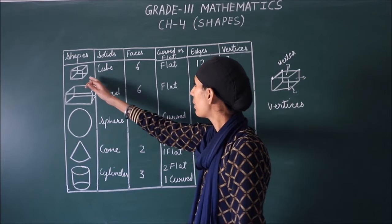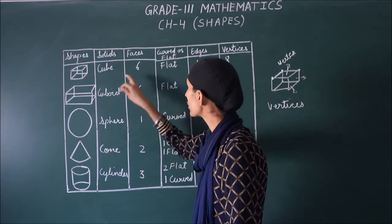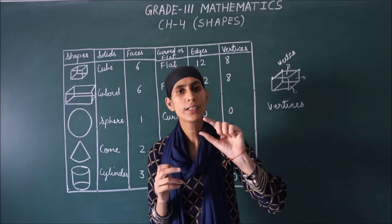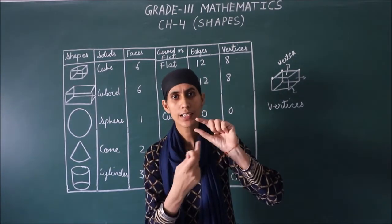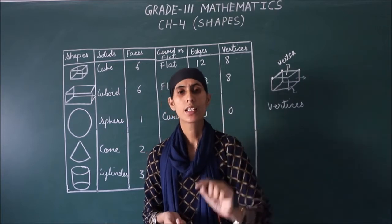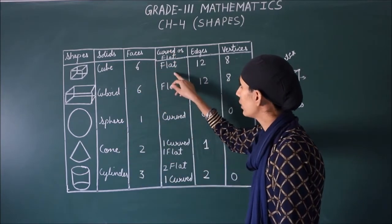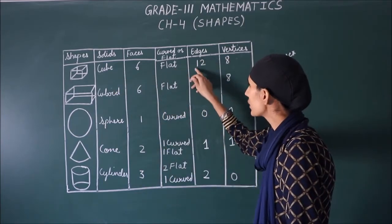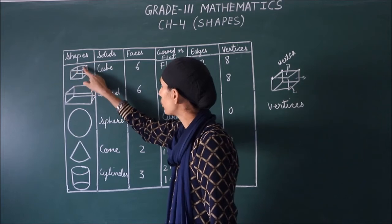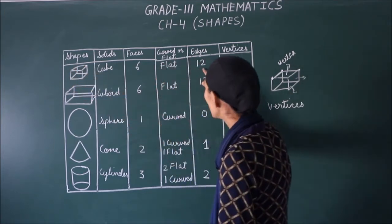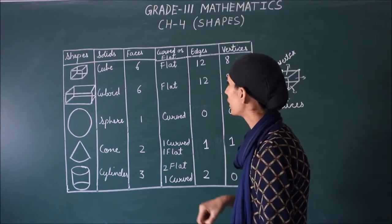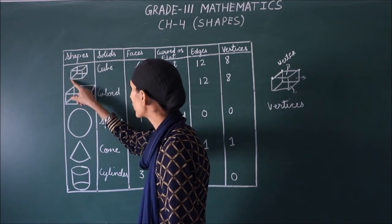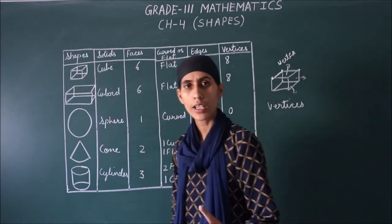So first, how many faces do we have in our cube? Six faces. You count the dice. You have seen the numbering in it. Six numbers are written in it. It means six faces. And curved and flat, which is your cube, it becomes flat. Next, edges. These edges, which you see the lines. How many are these edges? Twelve. And how many are the vertices? Eight. One, two, three, four, five, six, seven, eight. So eight vertices.